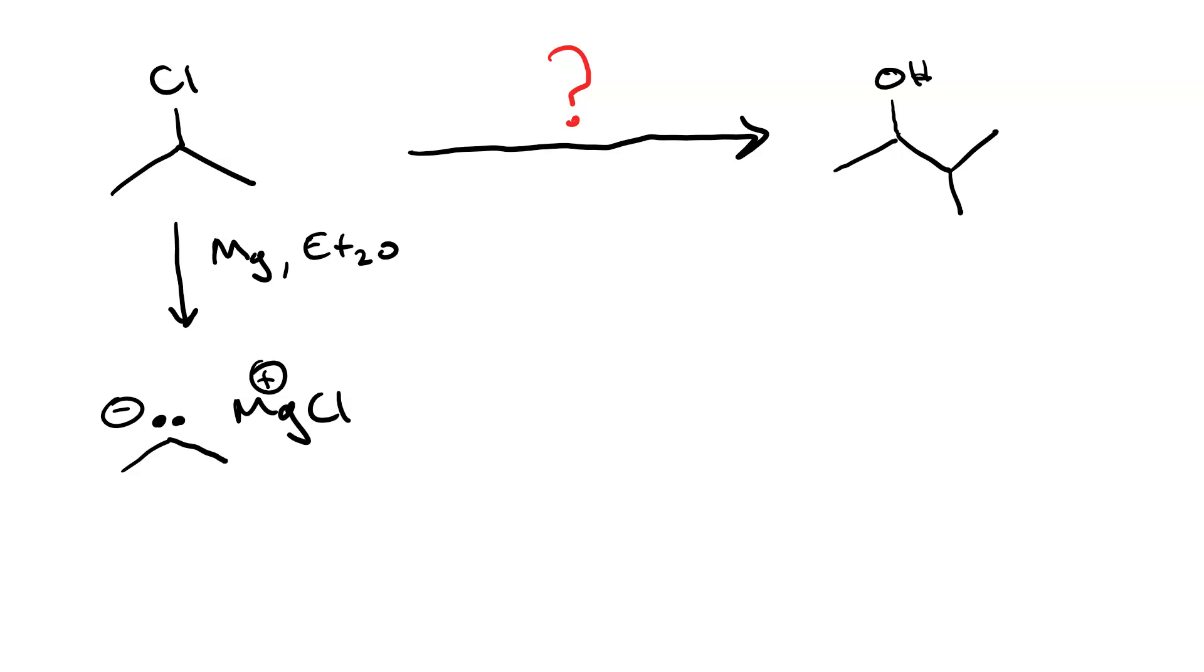In our second step, we have to combine the Grignard Reagent with the appropriate carbonyl, and that carbonyl is going to supply those atoms. So we need an aldehyde, like this. Now we're going to do nucleophilic attack.